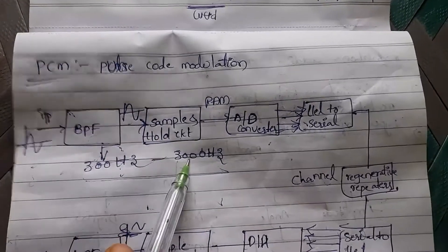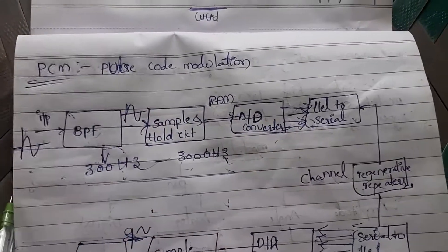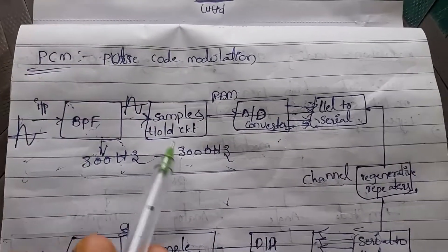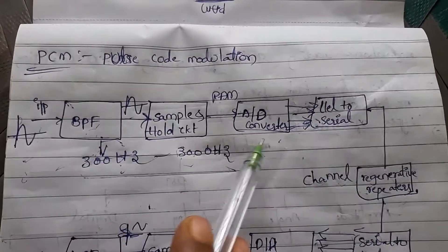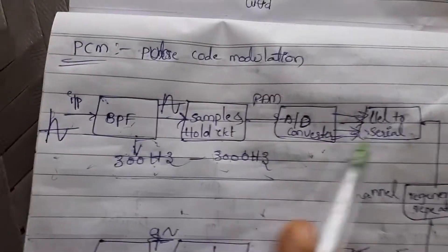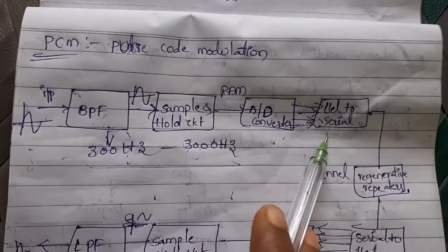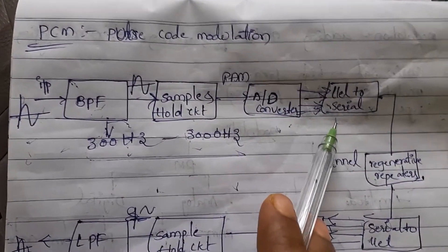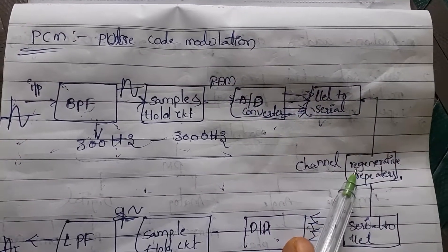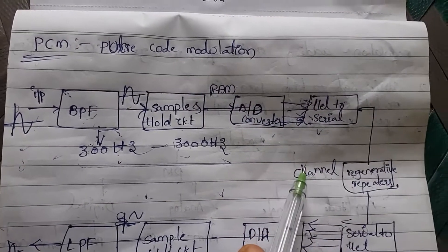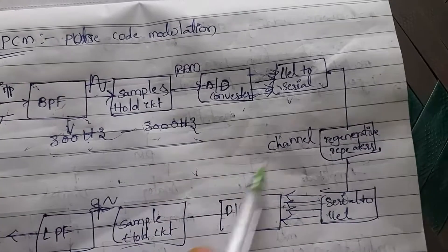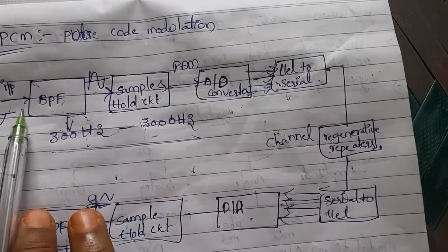In the transmitter, we have four blocks: BPF (Band Pass Filter), Sample and Hold circuit, ADC (Analog to Digital Converter), and a Parallel to Serial converter. After that, we have regenerative repeaters, which we can also call the channel.